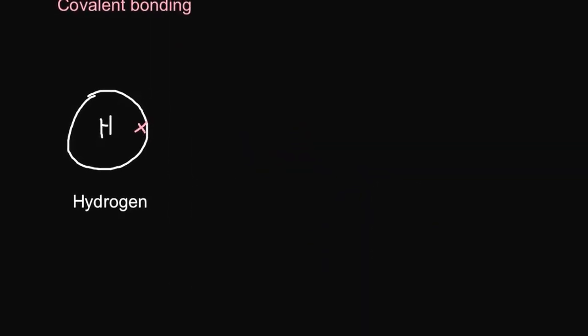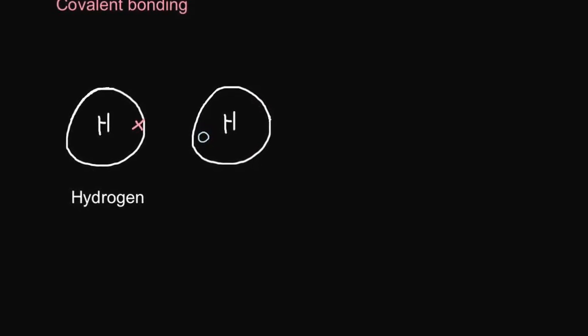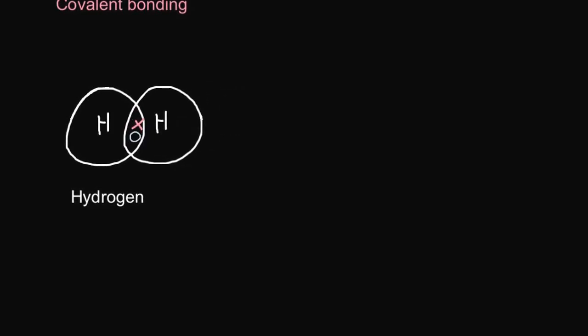All atoms want to have a full outer shell. Hydrogen has one electron in its outer shell, so it needs one more electron. I've drawn another hydrogen atom here — this time its electron is this blue circle. This hydrogen atom also requires one more electron to have a full outer shell. What can happen is these hydrogen atoms can get together and share the electrons. This is what is known as a covalent bond — it's when a pair of electrons are shared between two atoms.